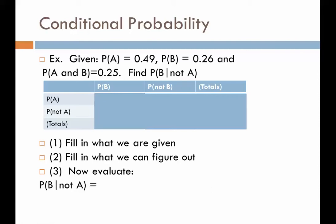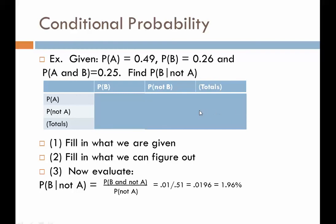Looking at the table, let's find the probability of B given not A. First, we go to the intersection of B and not-A. The value in that box was 0.01 — 1%. So 1% goes on top, and then we use the probability of not-A, which we found to be 51%. So 0.01 divided by 0.51 gives 0.0196, or 1.96%.